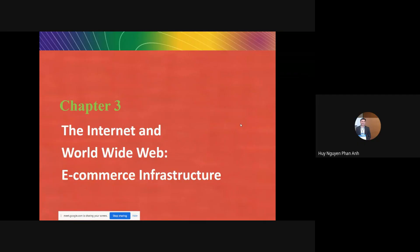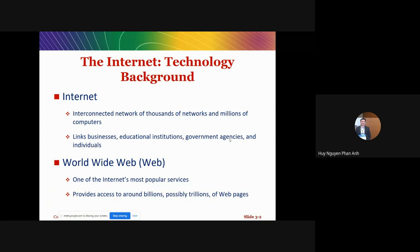We learned about Chapter 3 about the internet and the worldwide web, and some related concepts of e-commerce infrastructure. The internet has a long history, more than 50 years, and has changed many things including business models and our lives. The main purpose of the internet is to connect millions of computers, networks, or devices together so they can link to businesses, educational institutions, government agencies, or individuals.